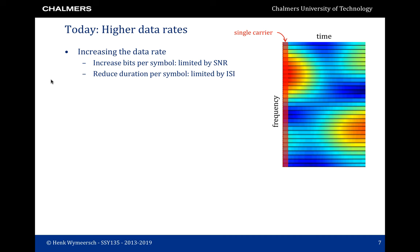So far we have seen two methods to combat the adverse effects of the wireless channel. We first saw diversity, which is a way to make the wireless channel more reliable and behave more like an additive white Gaussian noise channel. The second one was adaptive transmission, where we can adapt power and rate to maximize throughput.